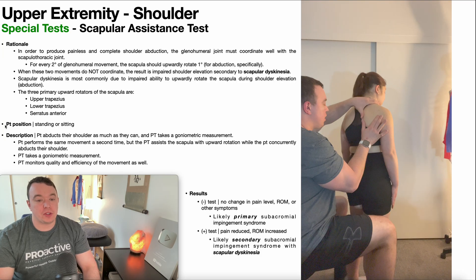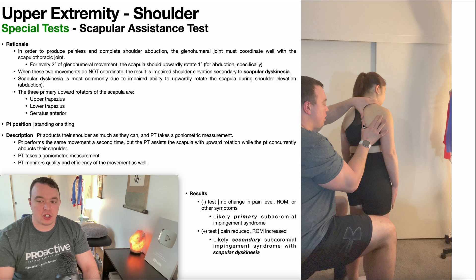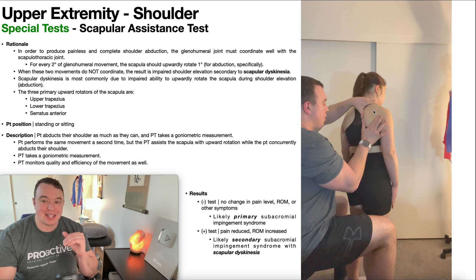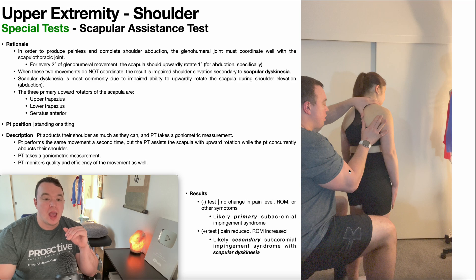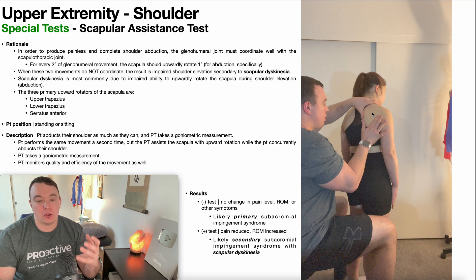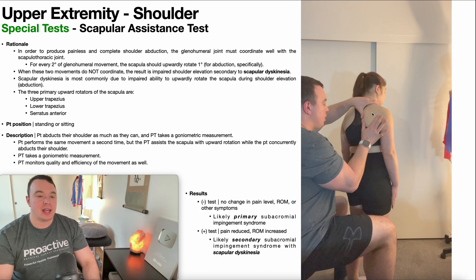To perform the scapular assistance test, the patient is going to be positioned either in standing or sitting. Now, if you're a lot taller than your patient, as I am here, it's best if the patient is standing. That way you can sit on a stool and you're approximately eye level with the patient's scapula, which will make it easier to control the movement of the scapula later on in the test.